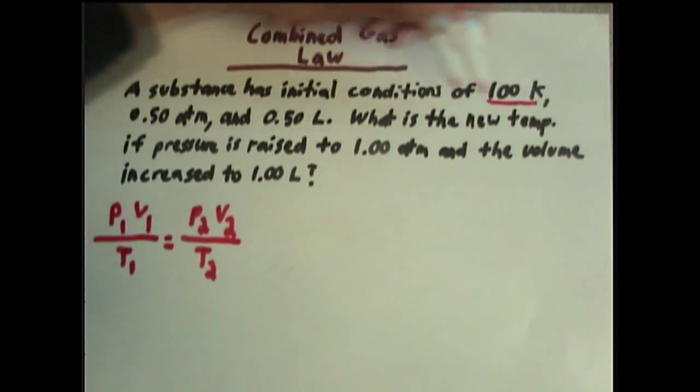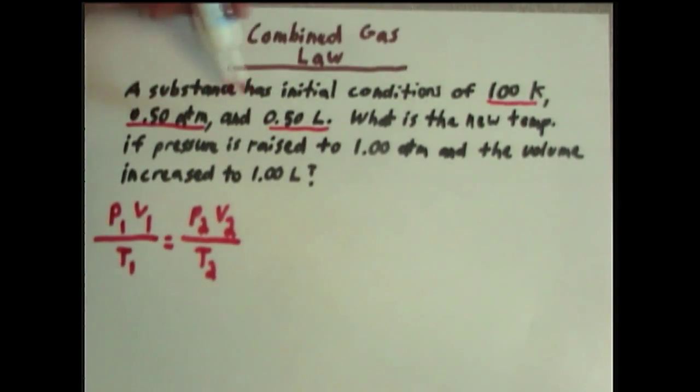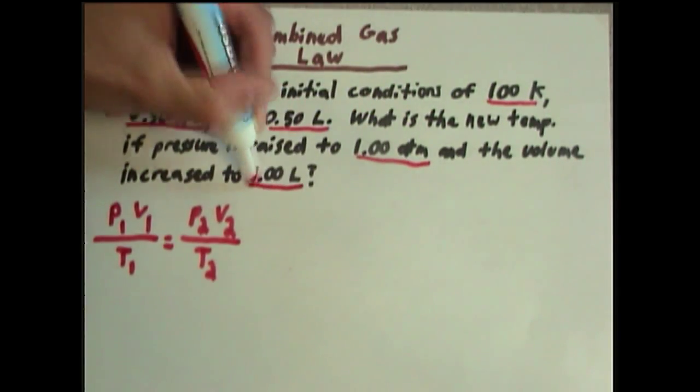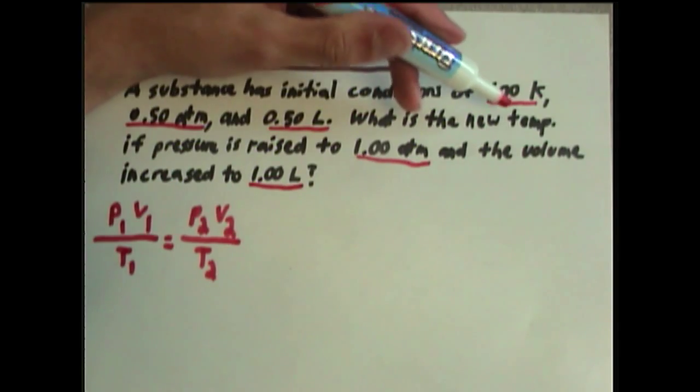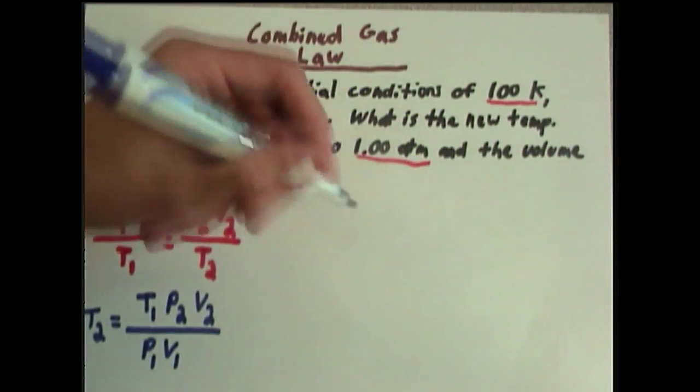And we can see that we have all of these in here: temperature, pressure, and volume. And we change the pressure and the volume, and we're wanting to find the new temperature. So, if we were to rearrange this equation algebraically, we will find, solving for T2, that T2 equals T1 times P2 times V2 divided by P1 times V1. And we have all of our values, so now we just plug in our numbers.